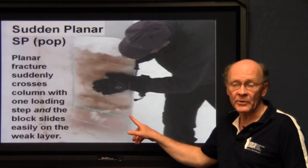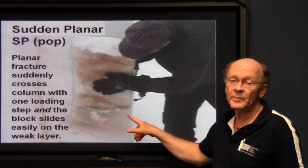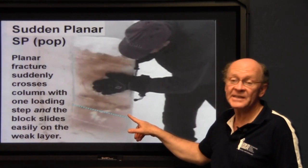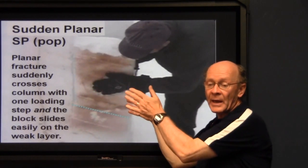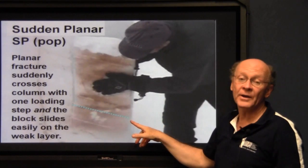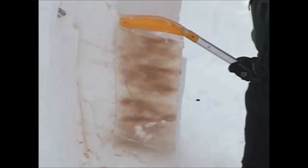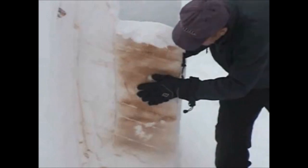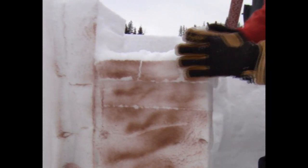For a sudden planar, or SP, also called a pop, we have a planar fracture that suddenly crosses the column with one loading step — that's one specific tap — and then slides easily on the layer. We decide if it slides easily either by gripping the sides of the column and seeing if it slides easily on the fracture, or if we're on a steep enough slope, the upper part of the block slides off. This is an example of a sudden planar fracture. In this slow motion clip, we see a fracture that is sudden and planar. Here is another example of a sudden planar fracture in which the block slides easily.